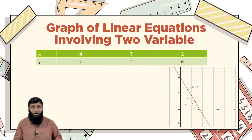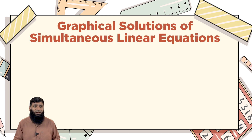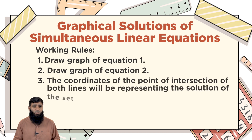Since x is the independent variable, we can choose any value for x — but try to choose smaller values so your graph fits within the given coordinate system. With these three coordinates plotted, we get a straight line which is the graph of the given equation. Now for the graphical solution of simultaneous linear equations, the working rule is: draw the graph of equation 1, draw the graph of equation 2, and the point of intersection of both straight lines is the solution of the system.